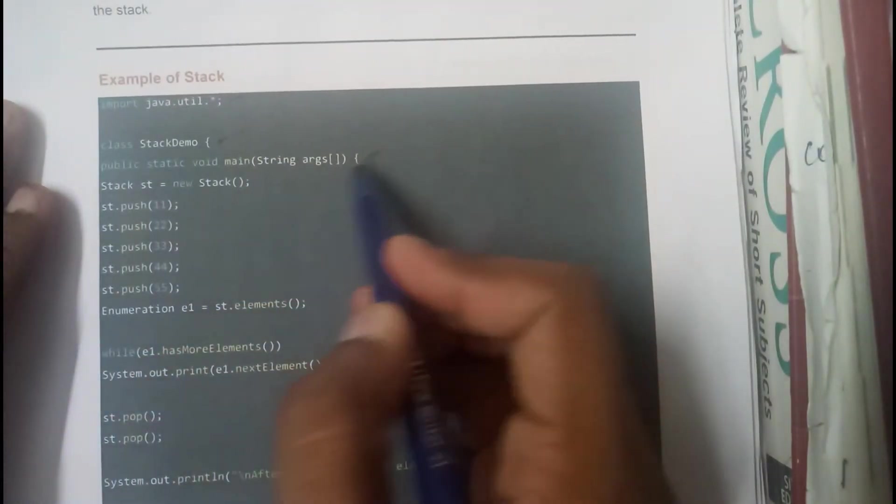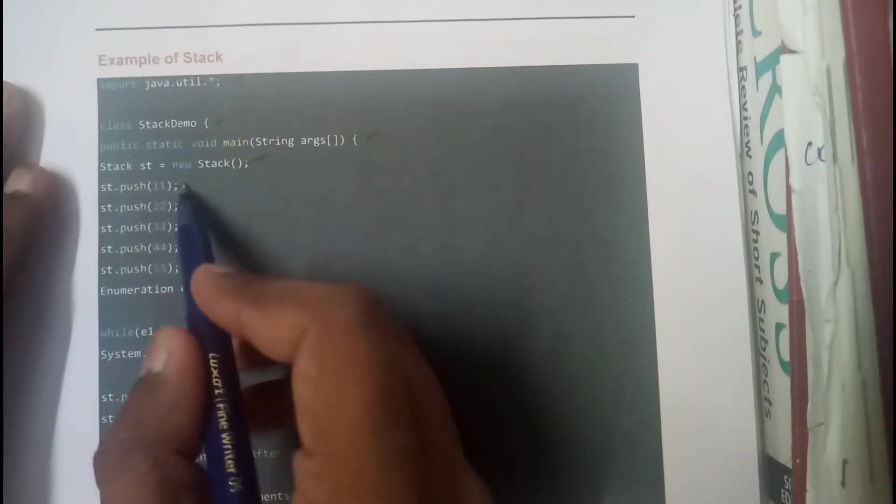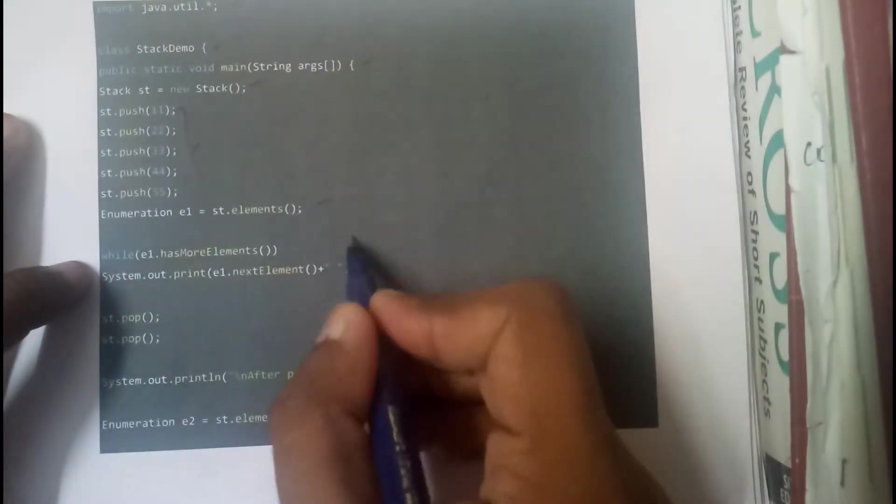This is a small example. We imported the files, class name, initialization. We have initialized the stack. We pushed 5 elements into it. We are using enumerator here. We have printed those 5 elements. After that we pop up 2 elements.